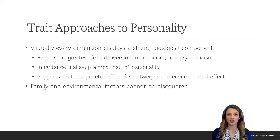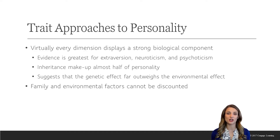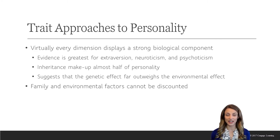Before we get started with Cattell's theory, I wanted to touch on the nature versus nurture issue with the trait approaches. Virtually every dimension of personality that we've studied over the years has been tied back to nature — DNA. The evidence for the relationship between personality and nature is strongest for several dimensions, including extroversion, neuroticism, and psychoticism. Research suggests that inheritance makes up as much as half of the variance in personality. Twin studies and adoption studies suggest that as much as 50% of our personality is determined by our DNA.